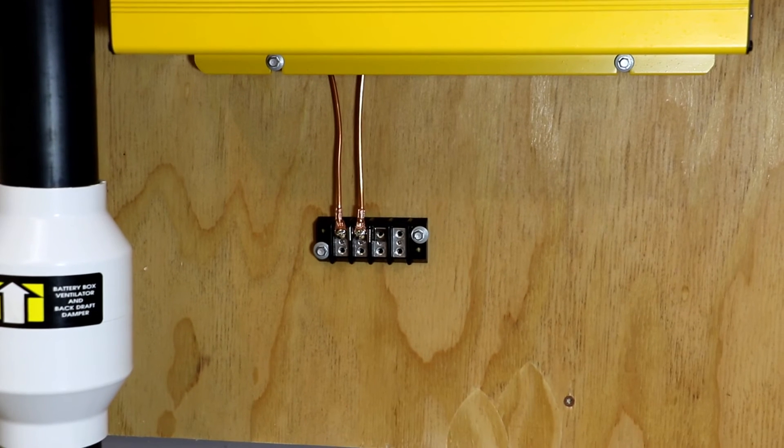Alrighty guys, so we've got the positive cable into the bus bar. Got the bus bar all closed up looking good over there, and then also I was able to add the first couple ground wires. So that's grounding the inverter as well as the charge controller.